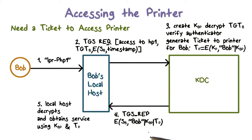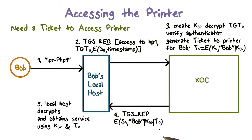The response contains a session key KBP, the ID of Bob, and the ticket to the printer, and it is encrypted using Bob's per-day key SB. Therefore, only Bob's local workstation can decrypt this and verify that it is from the KDC, because only the KDC can decrypt the ID of Bob correctly with the key SB — since SB is embedded in the TGT and only the KDC can decrypt the TGT.